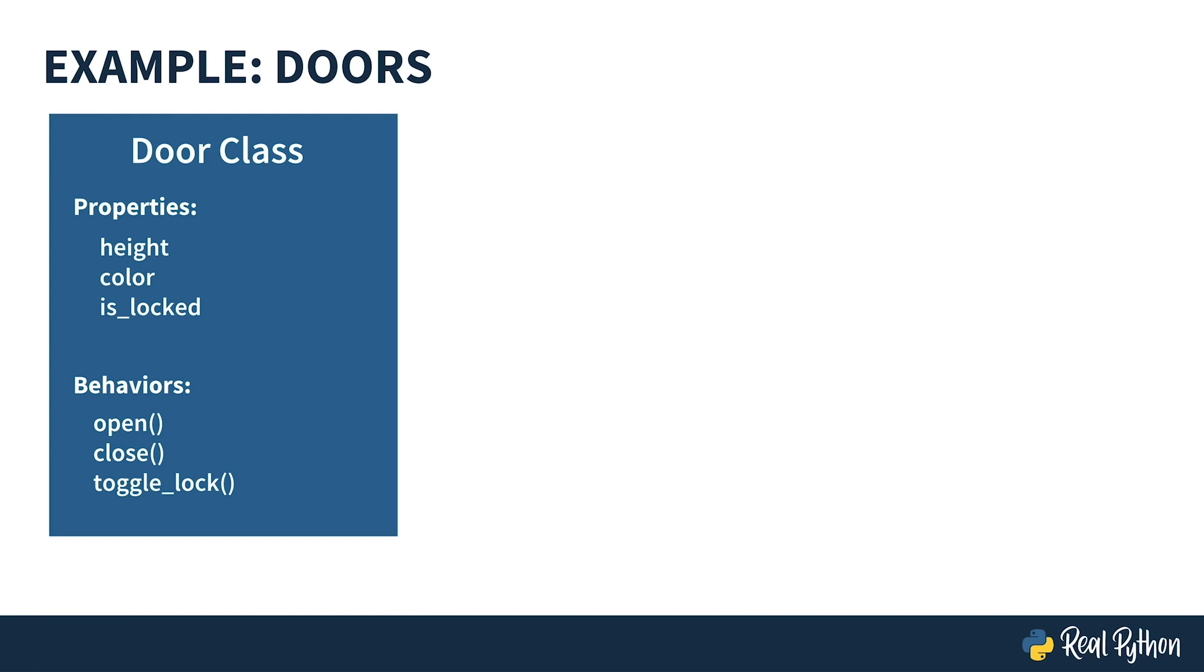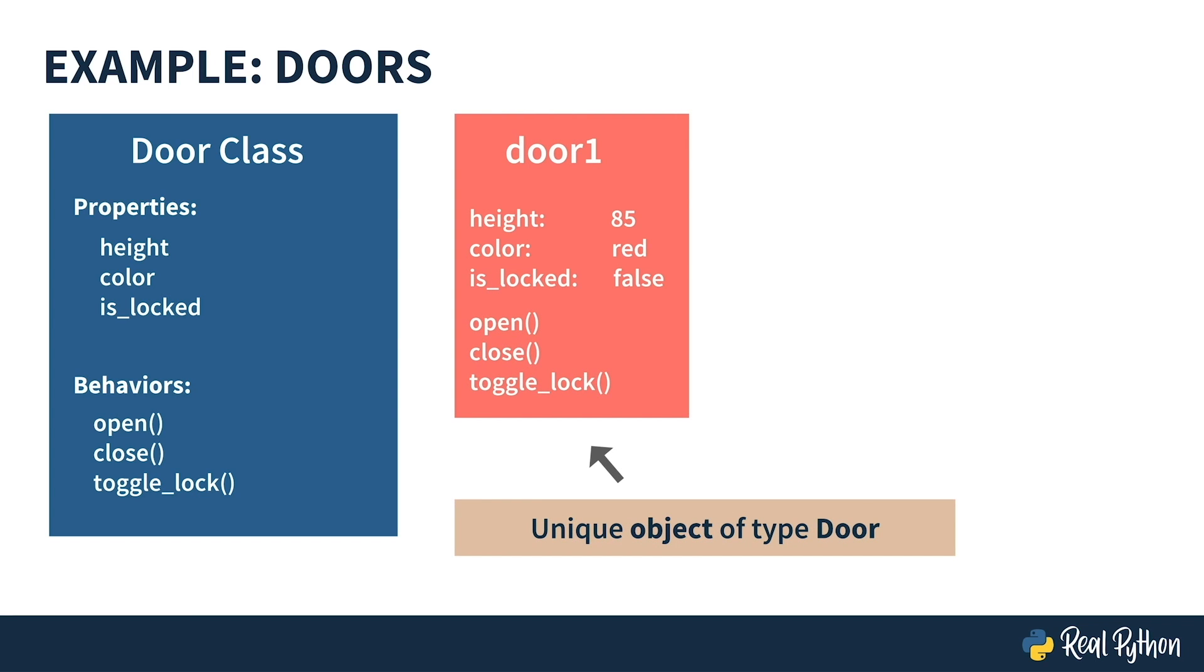We've defined a door class, but we've also just defined a new type we can use in our program. Let's create a door object with a height of 85 inches, painted red, and we'll say that when we build it, it's unlocked. Here, we've just instantiated the door class. Remember, that means that we've created an object of type door from our door class.